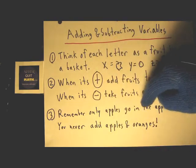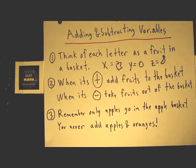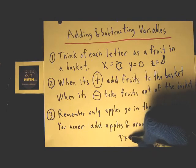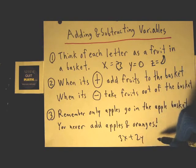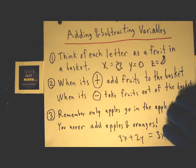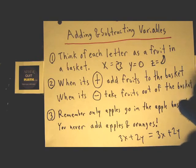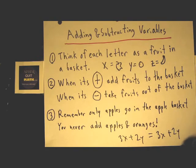Remember, only apples go in the apple basket. Never add apples with oranges. If you had something that was 3x plus 2y, the solution to that is just 3x plus 2y. If no values are given for these variables, you just leave them exactly the same. Apples and oranges, you can't add them up.